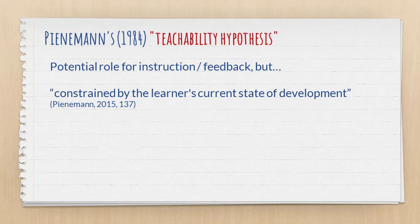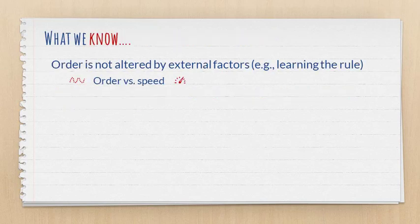Now Pienemann and Krashen don't agree with respect to the role of instructional intervention, such as focus on form, which we also unpacked in another video. But they do agree that instruction cannot change the order or the path of acquisition. So for example, just because you know the rule or somebody teaches you a grammar rule, that doesn't mean you're going to be skipping stages.